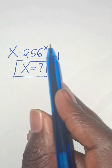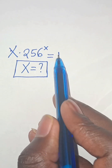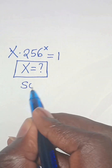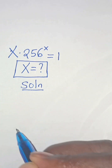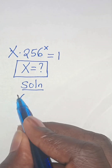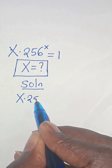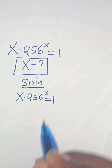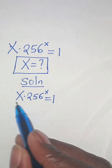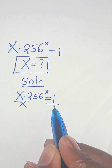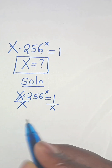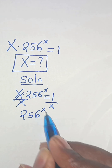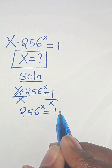x times 256 raised to the power of x is equal to 1. What is the value of x? Let's divide both sides by x, so that now we have 256 raised to the power of x equals 1 over x.